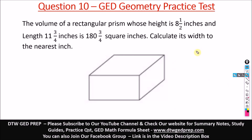This is Question 10 of the GED geometry practice test. The problem states: the volume of a rectangular prism whose height is 8½ inches and length is 11¾ inches is 180¾ square inches. Calculate its width to the nearest inch.